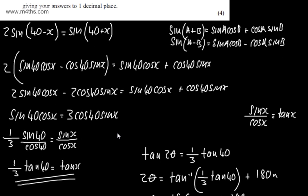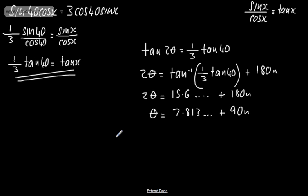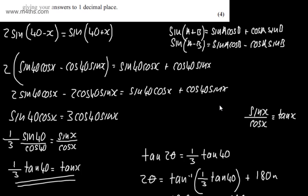If we list these out, we need to give them to one decimal place. From here, θ equals 7.8°. The next one will be 97.8°, then 187.8°, and the next one will be 277.8°. Any more and I'm going to go outside the interval where θ is between 0 and 360.